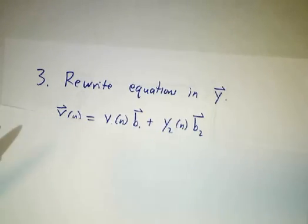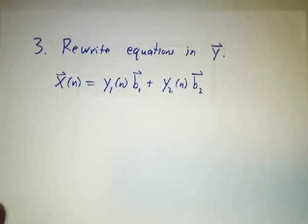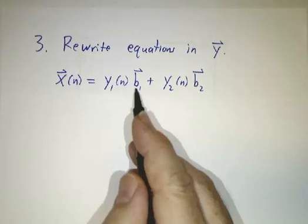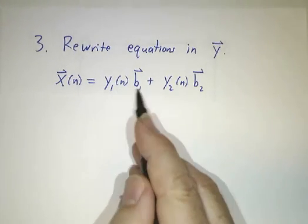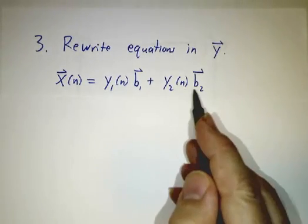Okay, now we want to rewrite our equations in terms of y. So, if x at time n is y1 times b1, so y1 at time n times b1 plus y2 at time n times b2.